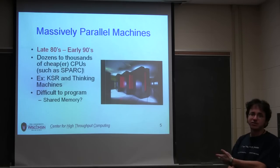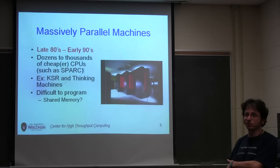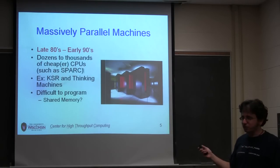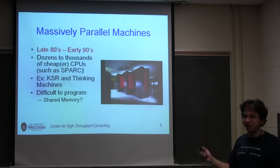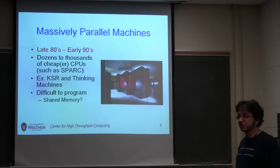Because CPUs — the only way to keep going with Moore's Law is to put more and more cores in a CPU. So pretty soon the machine on your desktop, a couple years down the road, will have 60 cores, 128 cores. It's going to look a lot like these machines did back in the day.